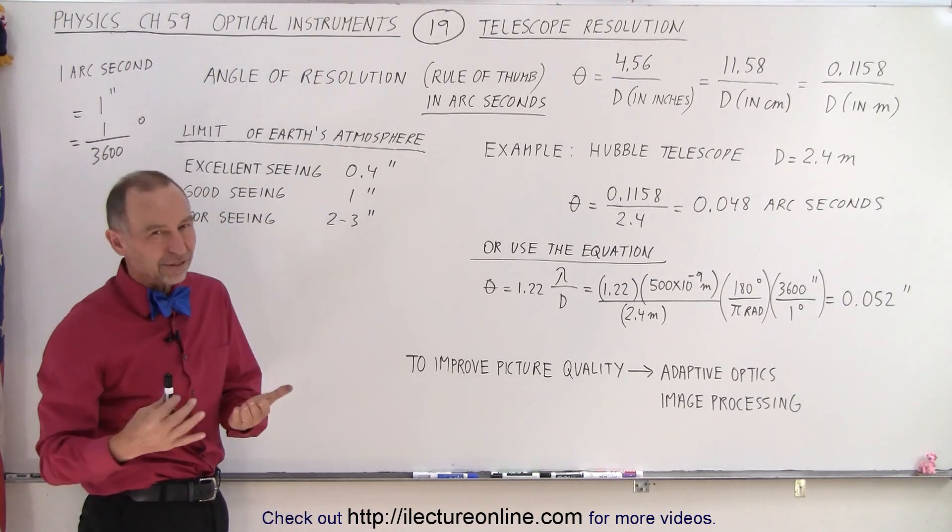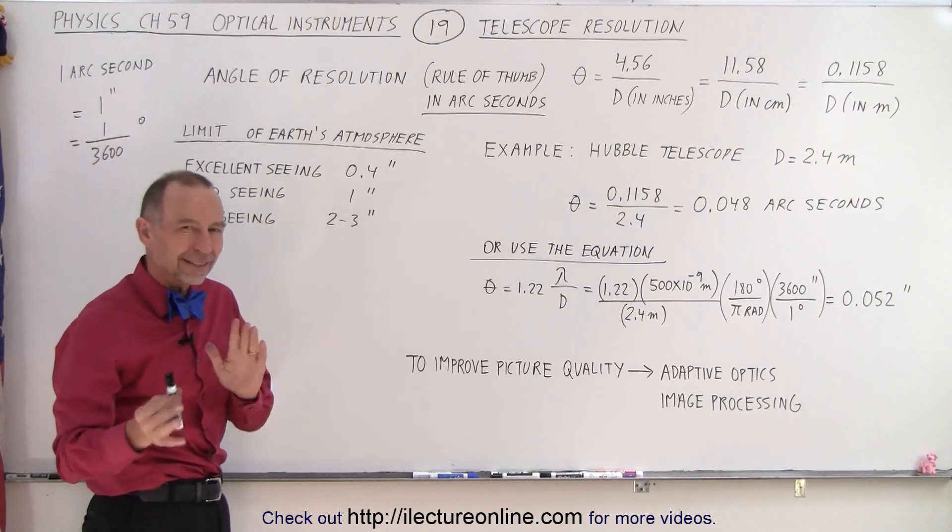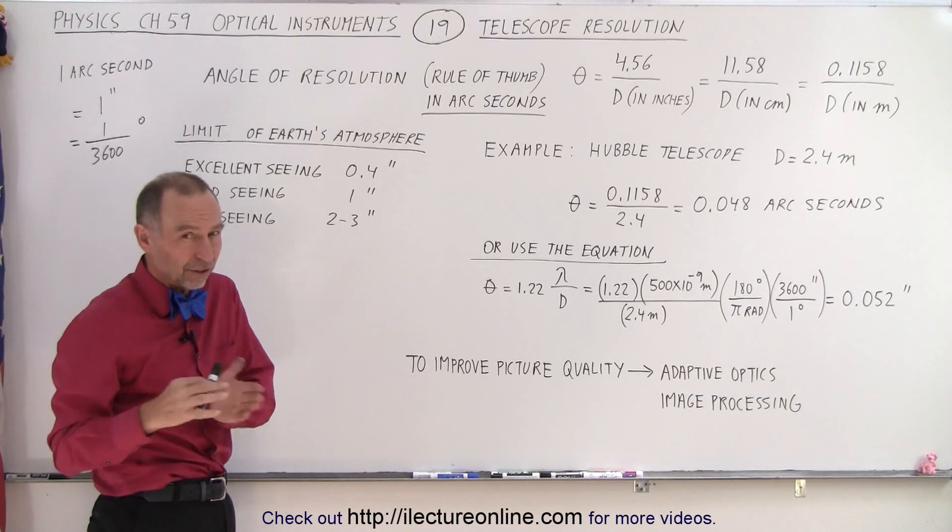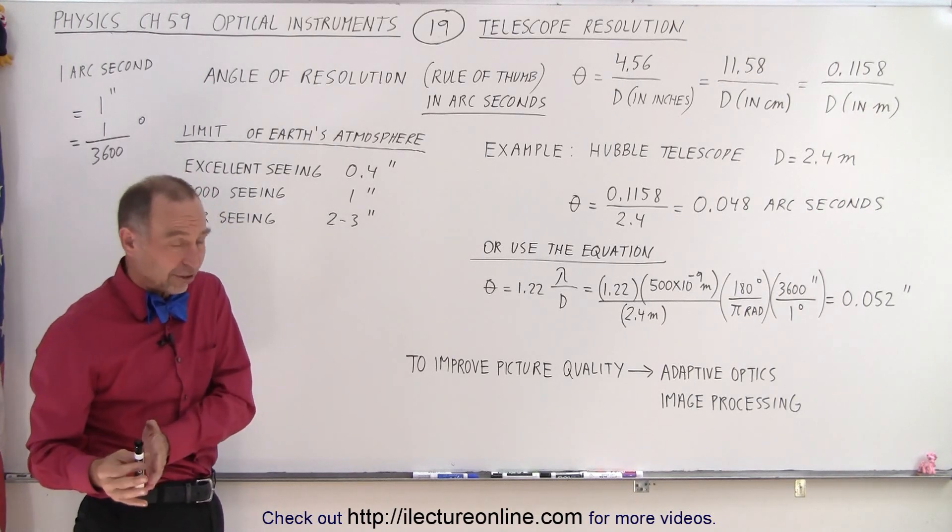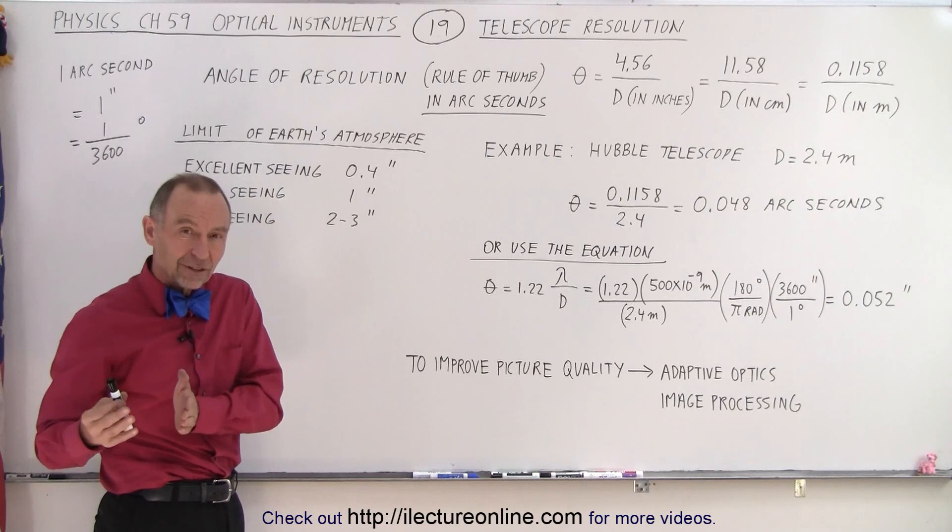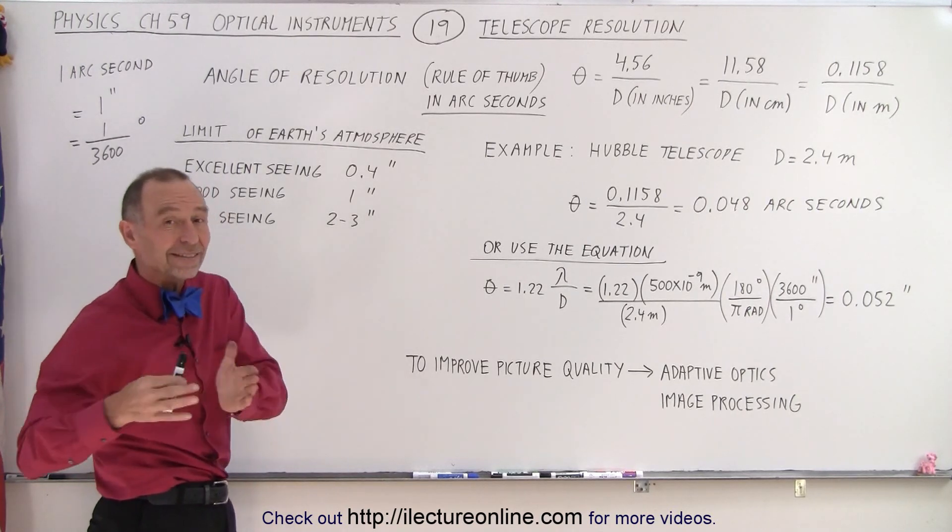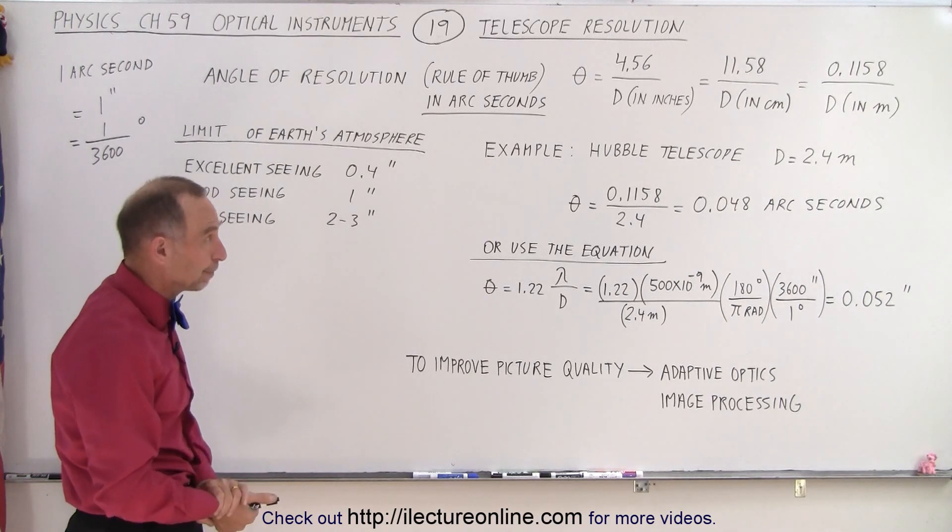And an arc minute is 1/60th of a degree. You can kind of see the connection between seconds and hours and minutes and hours. There's 60 minutes in an hour. There's 3,600 seconds in an hour. And so, there's 3,600 arc seconds in a degree and 60 arc minutes in a degree as well.